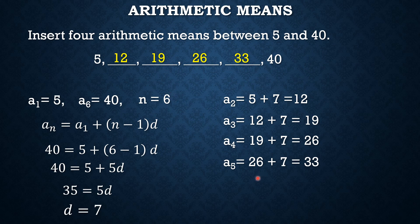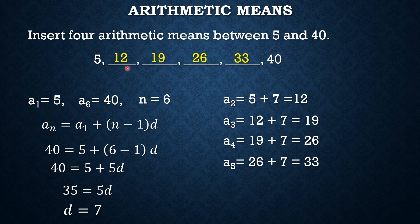And that's it. So therefore, the 4 arithmetic means between 5 and 40 are 12, 19, 26, and 33.